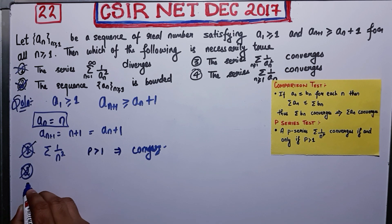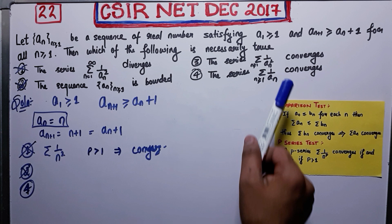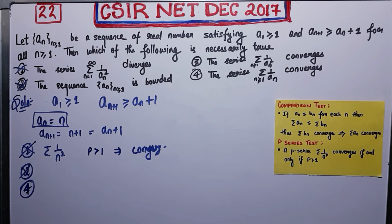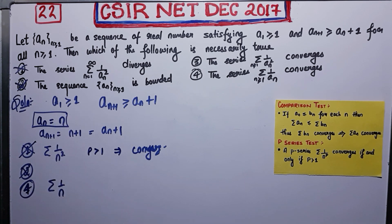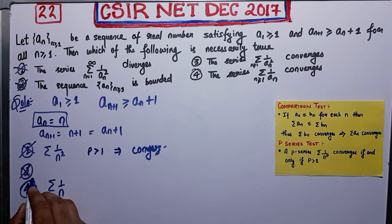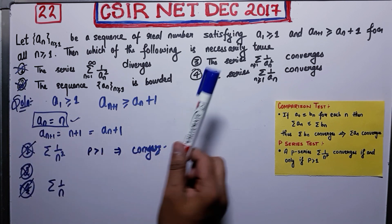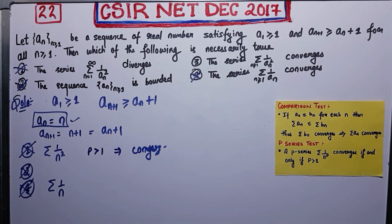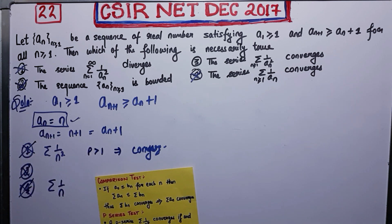Option 4 says the series summation 1 over a_n converges. Taking a_n = n, this becomes summation 1/n, which diverges by the p-series test (p = 1, not greater than 1). So option 4 is also incorrect. In your exam, if you are able to think of this example, you have already discarded options 1, 2, and 4, meaning the correct answer must be option 3. You don't need to prove option 3 in the exam.